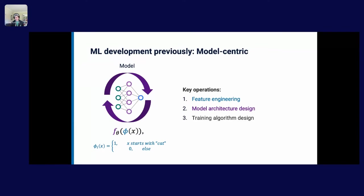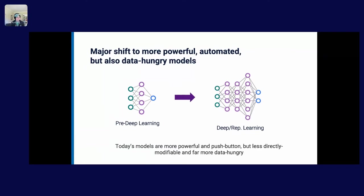Beyond feature engineering, you'd define model architectures — often handcrafted to encode basic assumptions, with more reliance on explicitly defined generative model structures that encode priors about how the data is distributed. Then bespoke algorithms and infrastructure to train and deploy those architectures. Over the last five-plus years, we've seen a major tectonic shift from these explicitly defined, manually architected models to widespread use of representation or deep learning models that actually learn their own features, using standard architectures and automatically learned features — but that are also far more difficult to modify in any human-parsable way and far more data hungry.